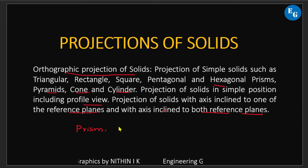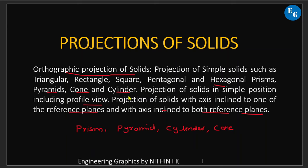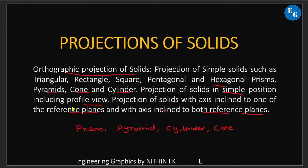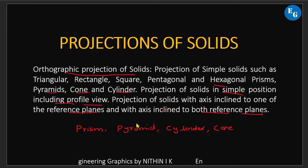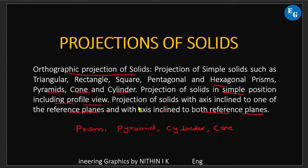Orthographic Projections of Solids covers prism, pyramid, cylinder and cone. Prism types include triangular, rectangle, square, pentagonal and hexagonal prism. Simple position means axis perpendicular to the reference plane, including profile view, that means side view. Projection of solids with axis inclined to one of the reference planes means HP and VP — one plane inclined, parallel to conditions — and with axis inclined to both reference planes.